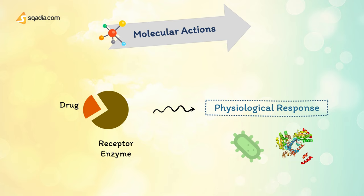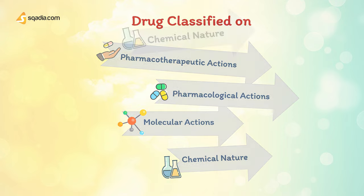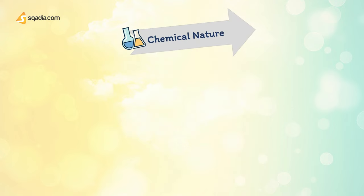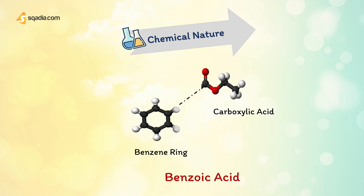Lastly, what is the chemical nature of a drug? Let us understand this by taking benzoic acid as an example. It contains a benzene ring and a carboxylic acid group. The properties of attachment of both these groups — whether they are hydrophobic or hydrophilic — defines the chemical nature of any compound. Pharmacology deals with this domain of study as well.